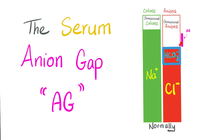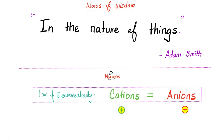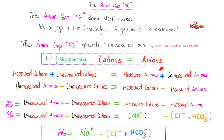What is the serum anion gap? Here is the deal. It's in the nature of things that the total number of cations in your body have to equal the total number of anions in your body, whether you're healthy or sick. Cations include the measured and the unmeasured cations; anions include the measured and the unmeasured. The anion gap equals the unmeasured anions minus the unmeasured cations, or the measured cations minus the measured anions.